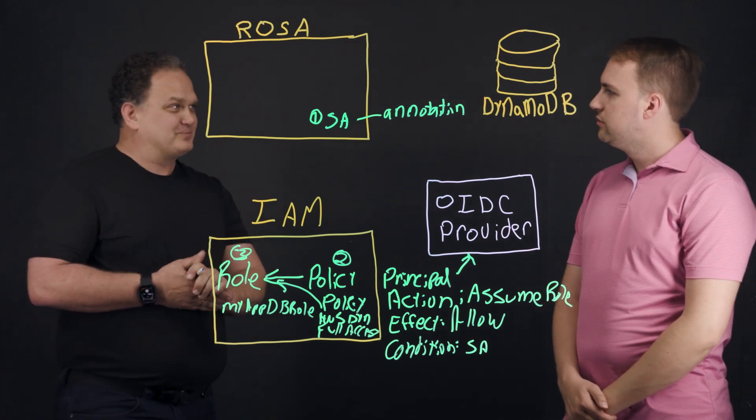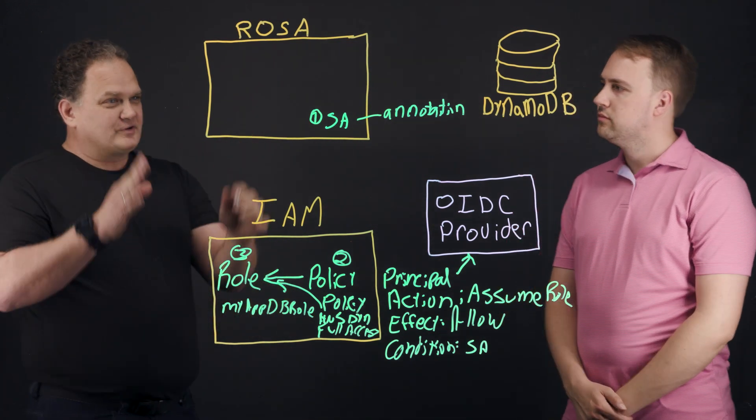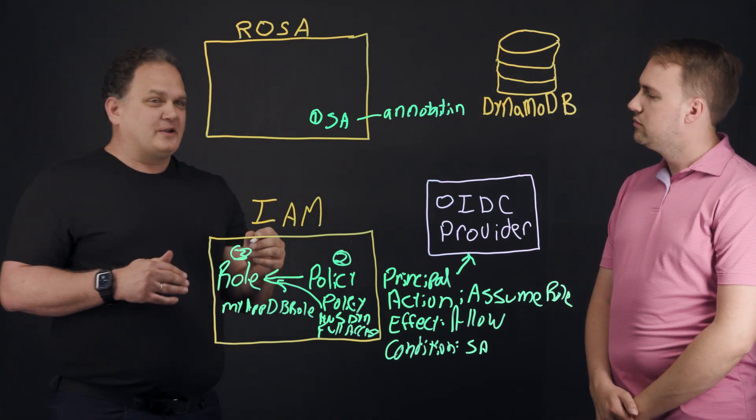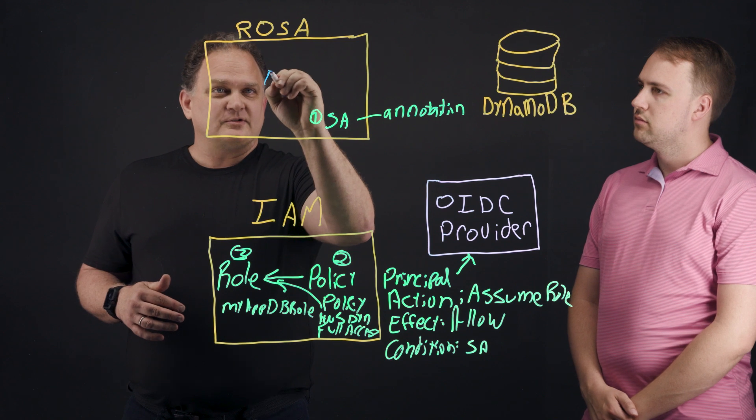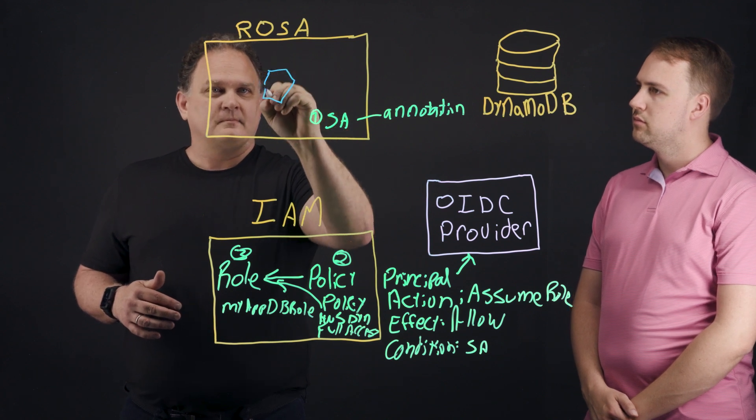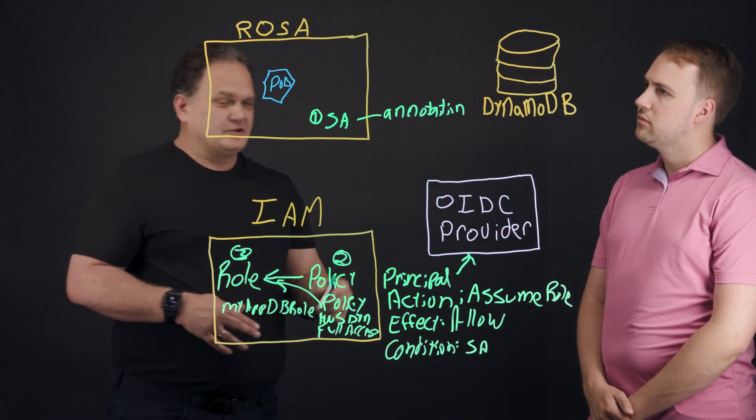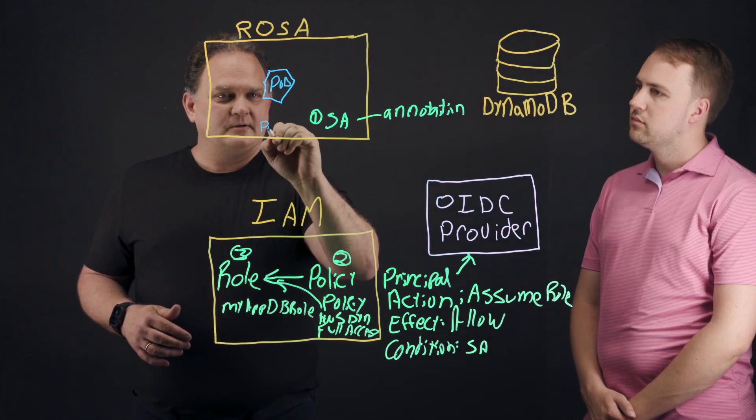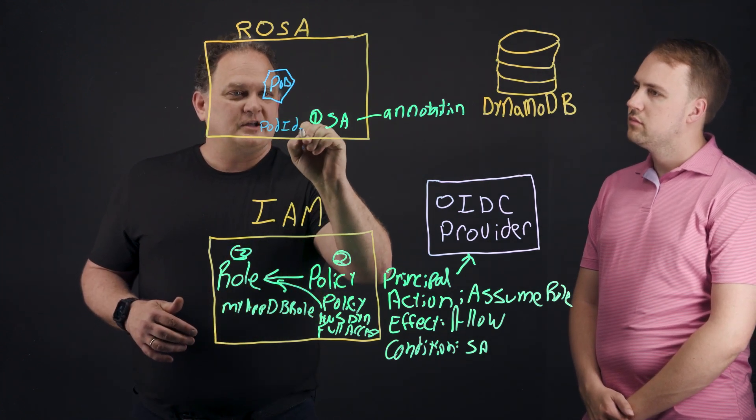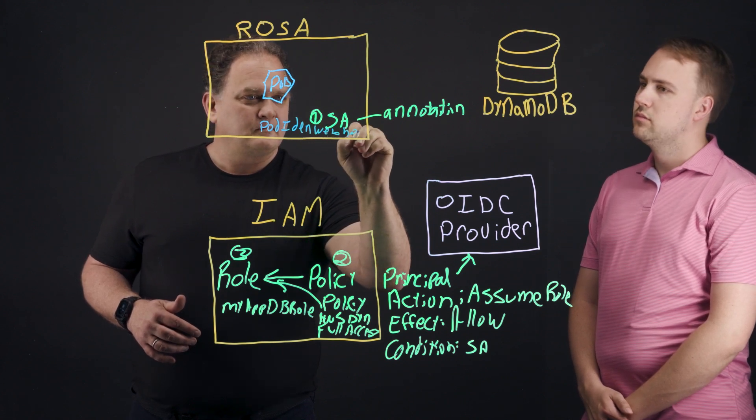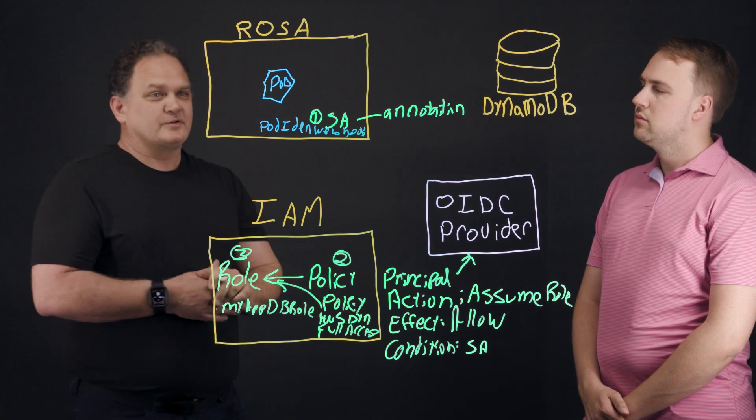Right. So that's the next step. So first we described this is all a user has to do to set this up. But the way it works in the backend is when we have an application, just create a pod here. So the pod is created initially. There's something called the pod identity webhook. And this webhook is listening for different events.